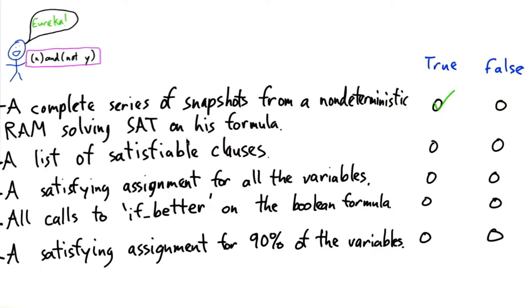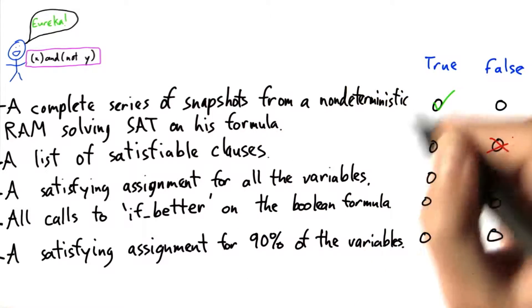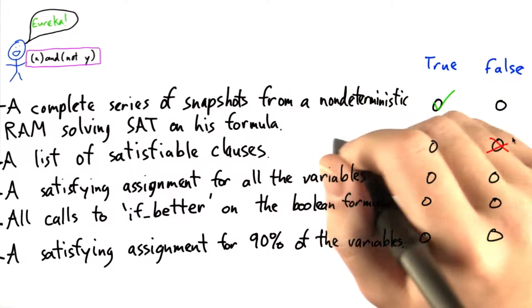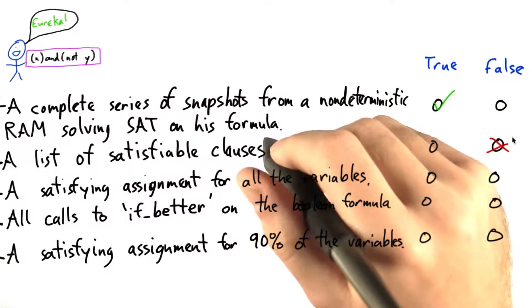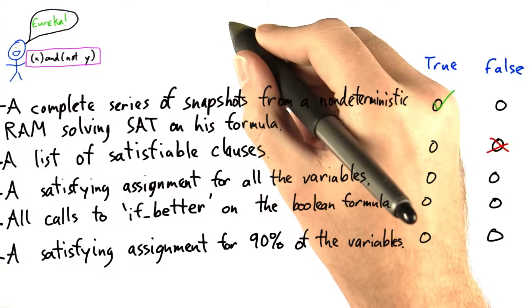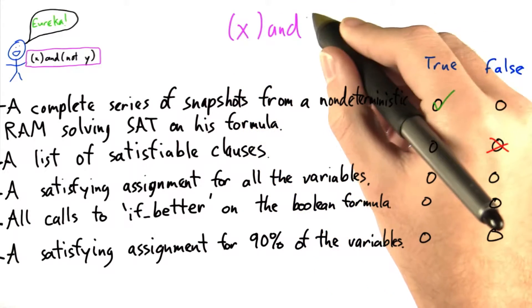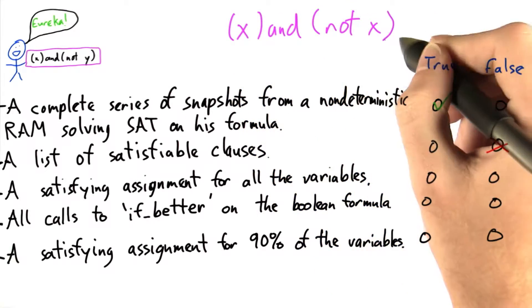Now, if we had a list of satisfiable clauses, this actually isn't enough to verify that Bob's formula is also satisfiable. To see this, let's take a look at the formula in somewhat Pythonic form, x and not x.